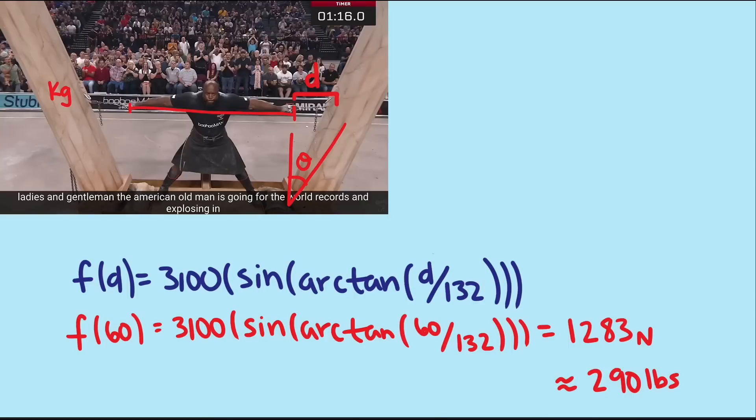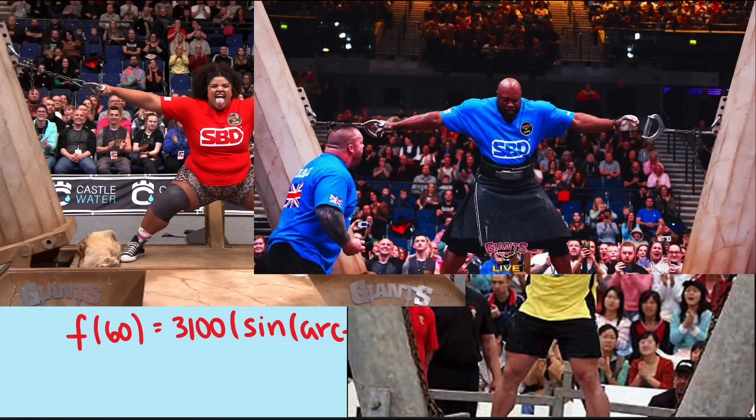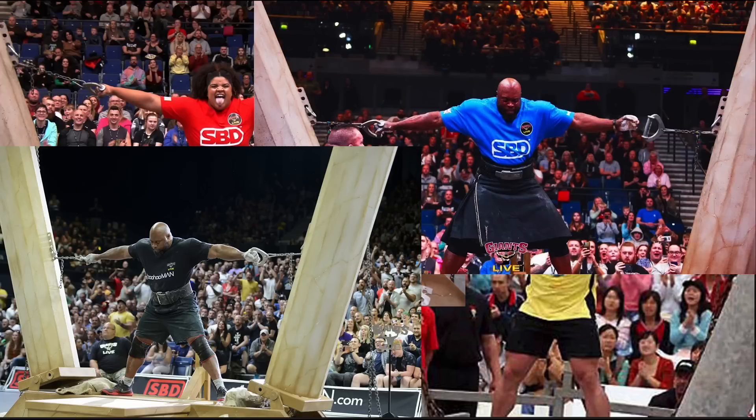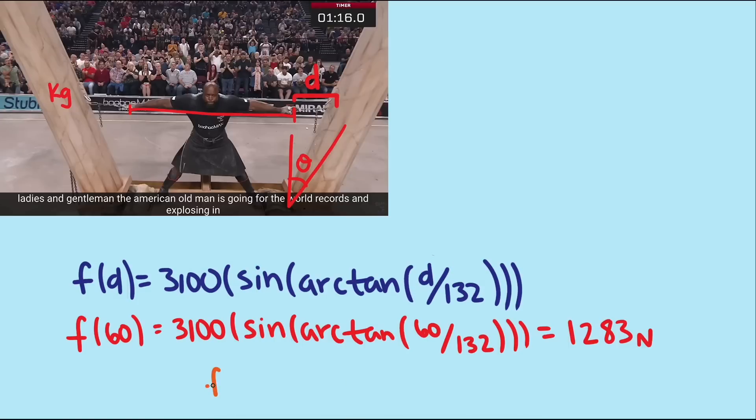Although the competition judges try to adjust the chain so the pillars lean out about the same, it's far from exact. So what happens if someone has longer arms and is leaning out more than another athlete? Well, we can use the derivative to help us make sense of the situation.